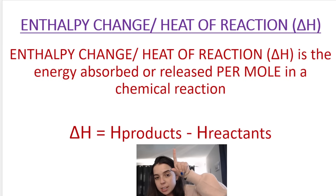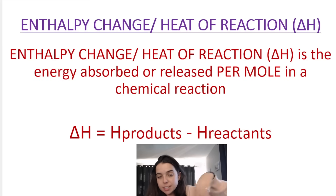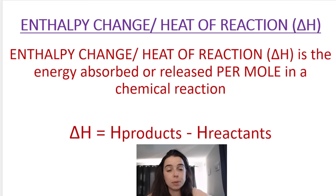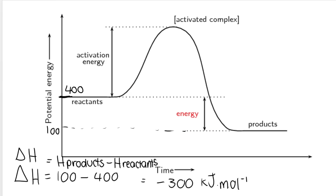We can calculate delta H using the formula: enthalpy of products minus enthalpy of reactants. This formula works when you are given a potential energy diagram. For example, in this reaction we can work out the change in enthalpy by saying the energy of the products corresponds to 100, minus the energy of the reactants which corresponds to 400. So 100 minus 400 gives negative 300 kilojoules per mole.